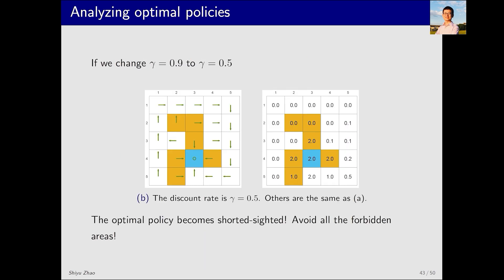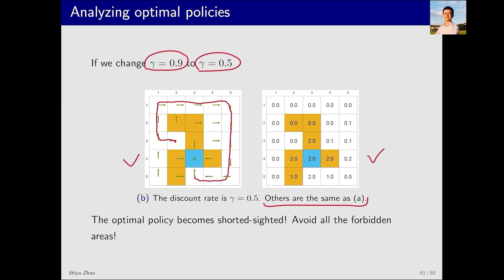By changing parameters such as rewards or the discount rate, we can observe how the optimal policy evolves. In this example, all parameters remain the same as before, except for the discount rate gamma, which changes from 0.9 to 0.5. This is the optimal policy, and this is the optimal state value. The optimal policy has changed: previously the policy moved right through the forbidden area, but now it changes to moving left, taking a larger detour around the forbidden area.